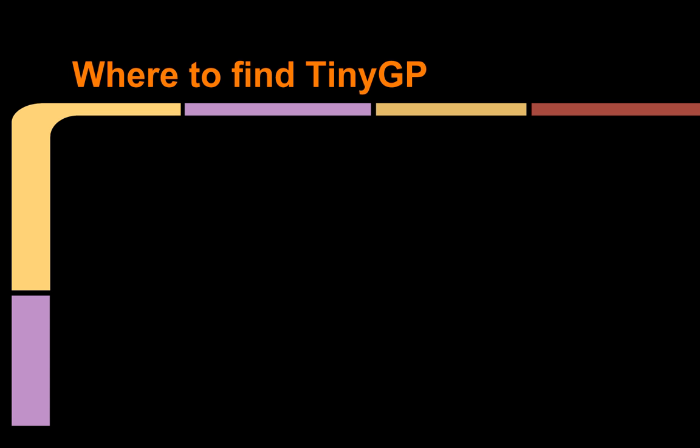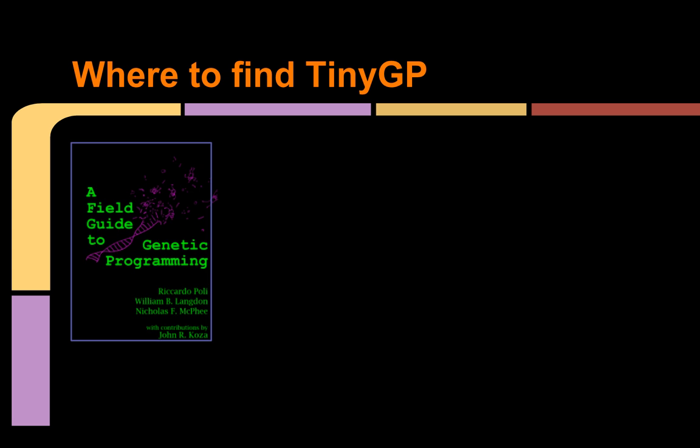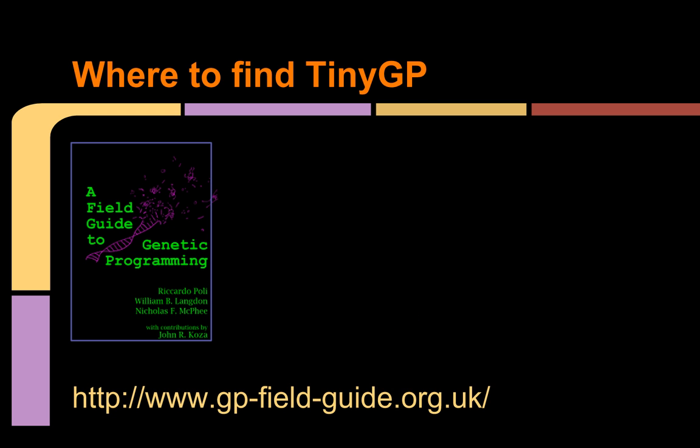I first saw TinyGP in a book titled A Field Guide to Genetic Programming from Creative Commons in 2008 by Ricardo Poli and others, but it turns out this book is free and can be found with the TinyGP code here at this URL.